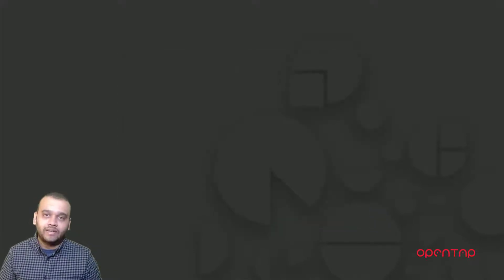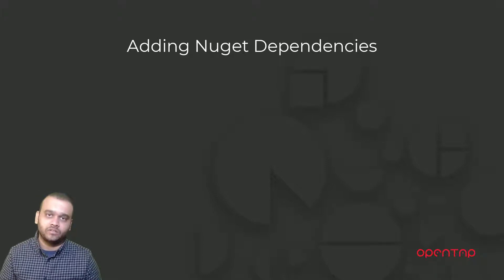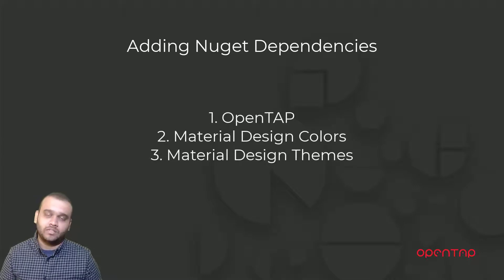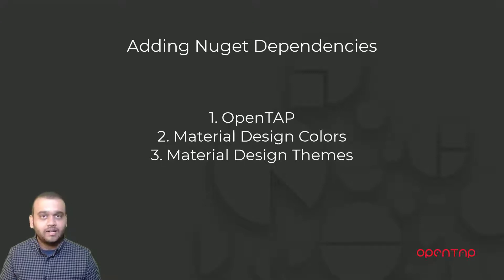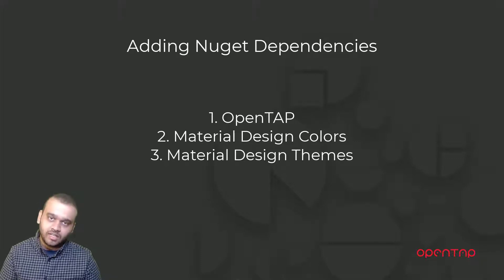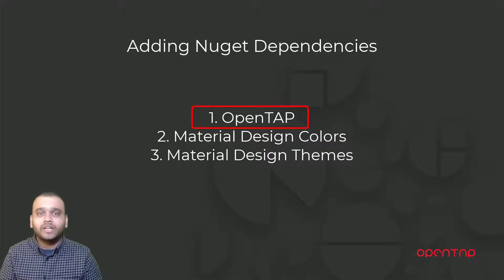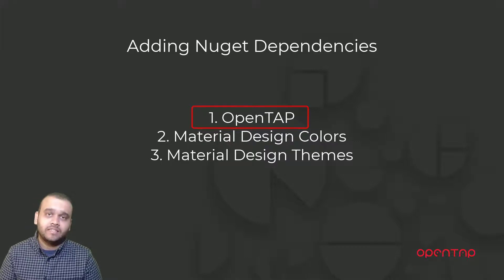Before we start developing the application, we need to first bring in our dependencies. These dependencies are brought in through the NuGet package manager. There are three NuGet packages we are going to be needing. These are the NuGet packages that are going to help us interact with the OpenTab engine as well as building the GUI elements. First is the OpenTab NuGet package. The OpenTab NuGet package contains all the C# APIs that allow us to interact with the OpenTab engine from any C# based application.